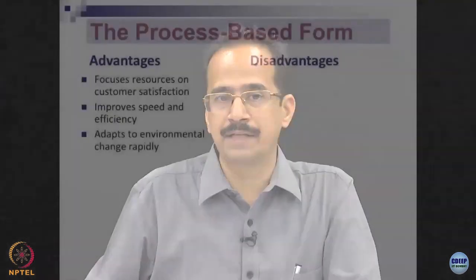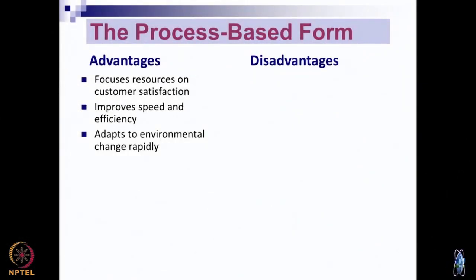Because of this cross-functional collaboration, there is an improvement in the speed and efficiency of delivery of products or services. Process-based forms of organizations are good at adapting to environmental change. When there is an environmental challenge — political, technological, or regulatory — if an organization is operating in separate departments, the response may be delayed due to interdepartmental communication requirements. Whereas in the process-based form focused on the customer, the probability of responding to environmental change is much higher.